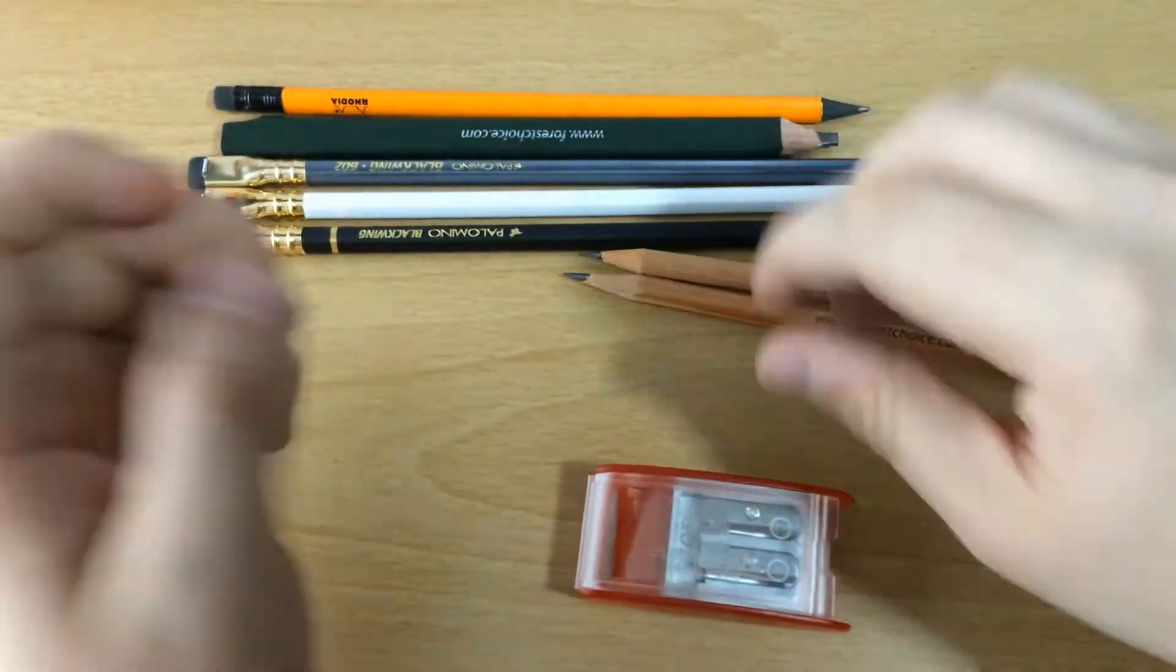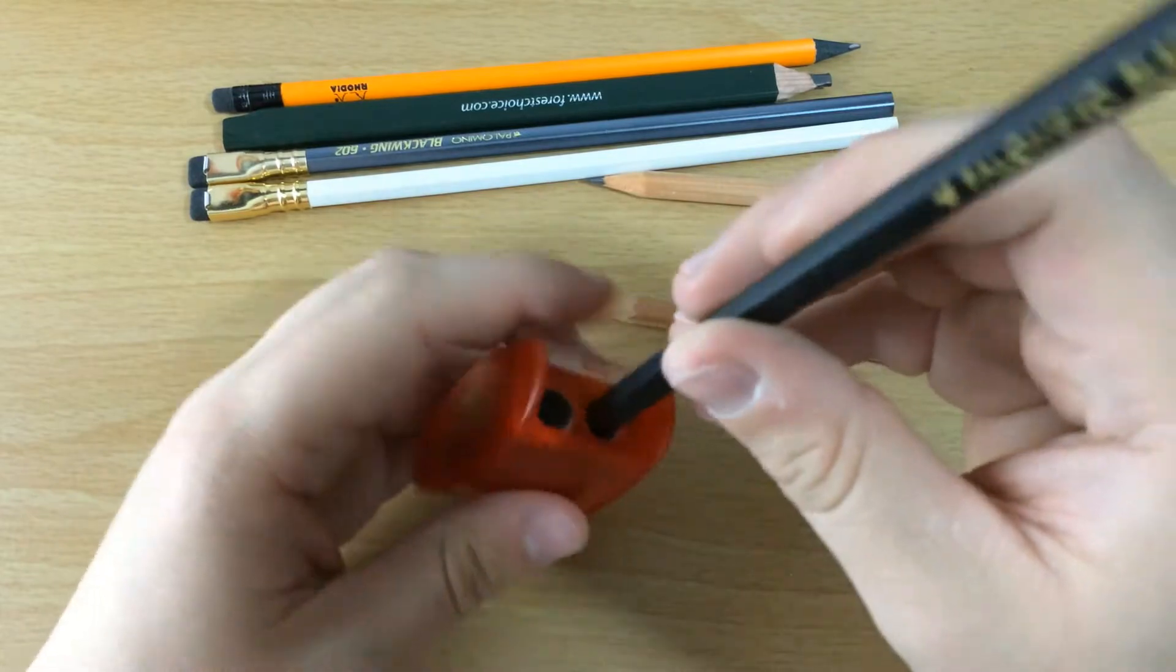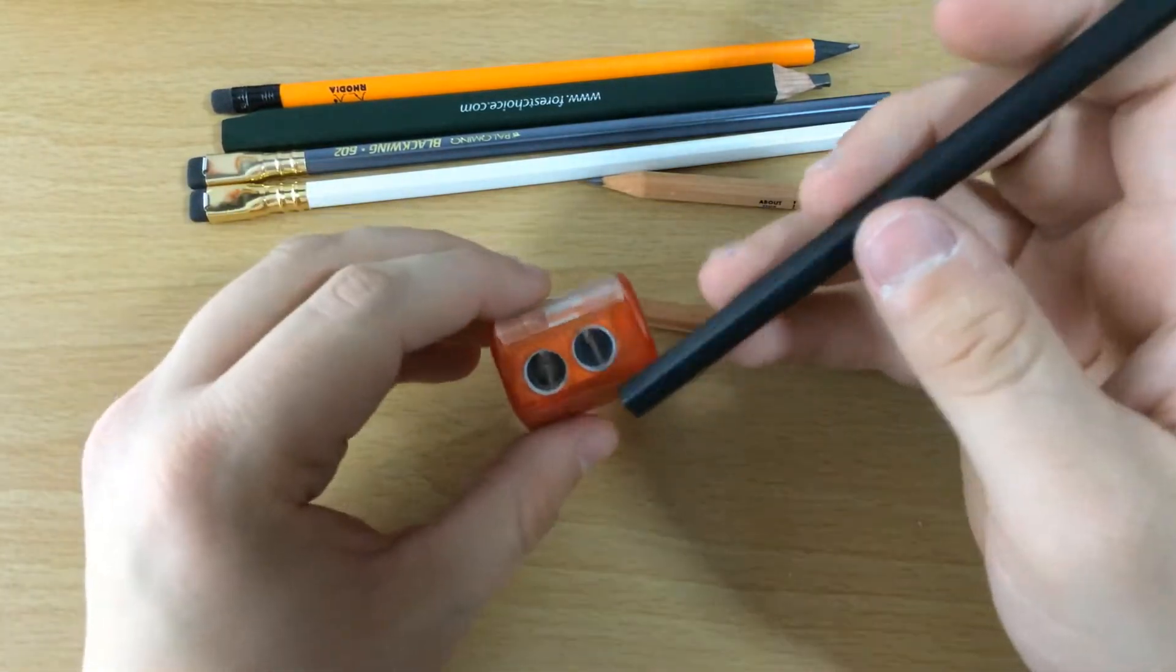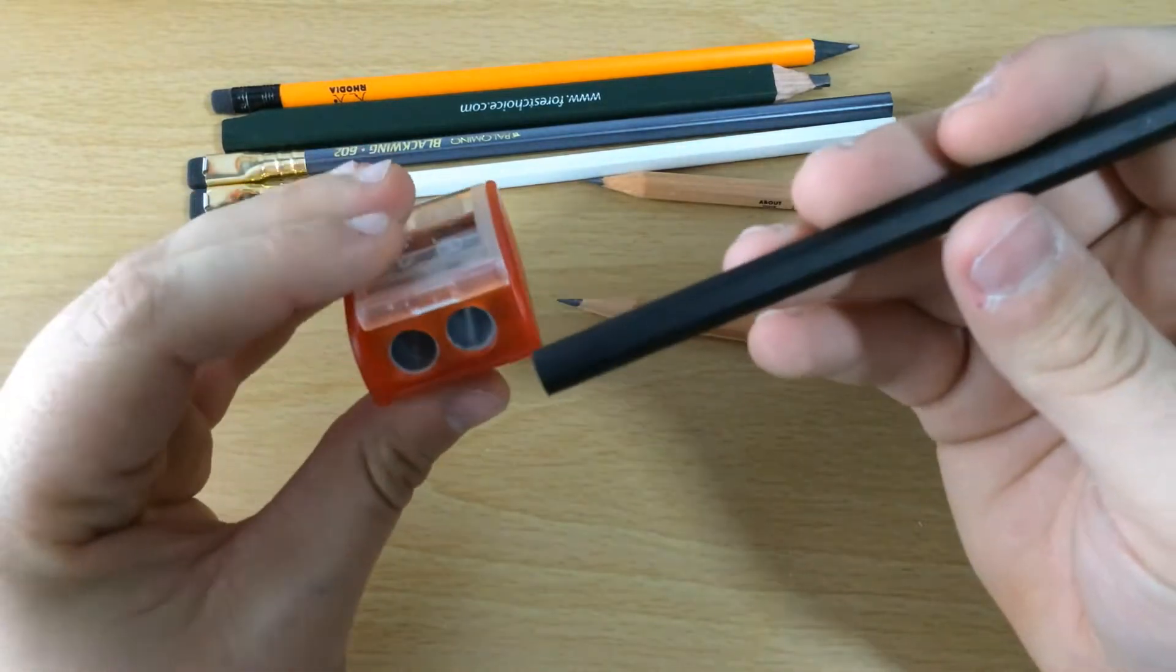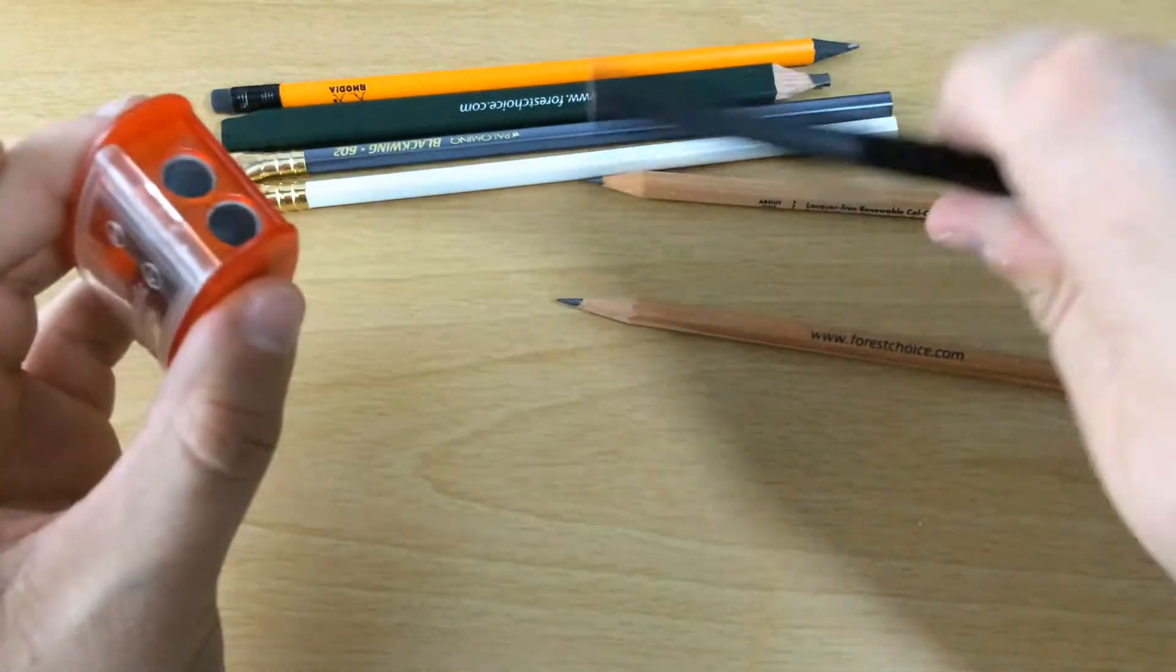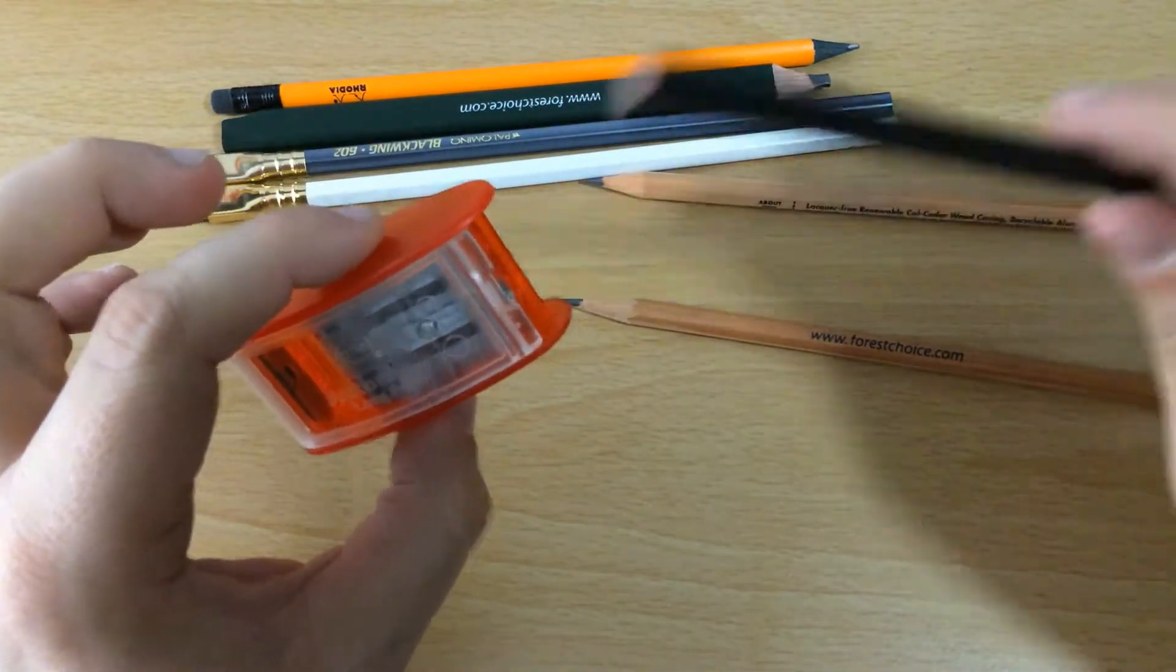The first time I tried it, I wasn't quite sure because I couldn't really figure out how to sharpen a pencil that would not fit in this hole. So I was like, oh, maybe it's for two separate sizes. And then I actually realized it's for two separate steps to get pretty much one of the best points, in my opinion, at least for these pencils.